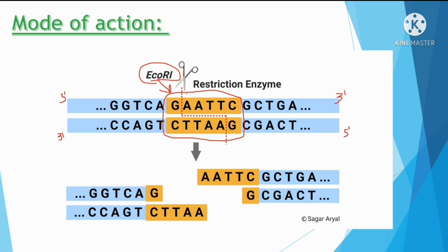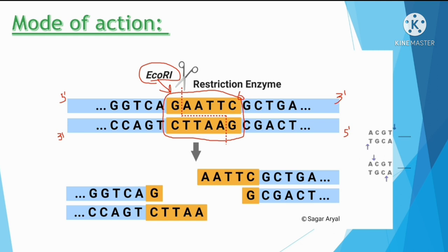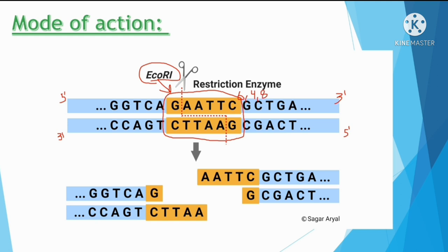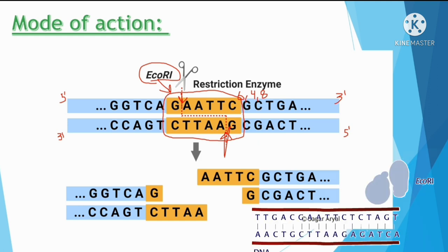These sequences are palindromic sequences. The recognition sequences may be 4 bases, 6 bases, or more than 8 bases — the maximum common length is 6, 4, or 8 bases. Within these sequences, there are recognition sites, and at those sites, there is a cutting site where the recognition sequence is cleaved.